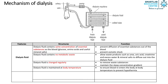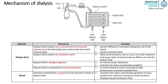Lastly, let's look at the blood. The direction of blood flow is opposite to the direction of flow of dialysis fluid. This helps to maintain the steep concentration gradient of waste products for maximum removal of waste products between blood and dialysis fluid. Blood drawn is added with anti-clotting chemicals to prevent blood from clotting in the dialysis machine.